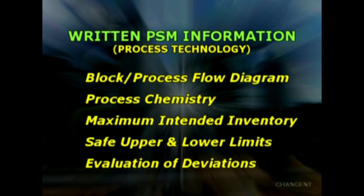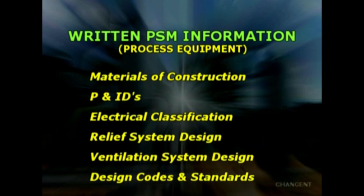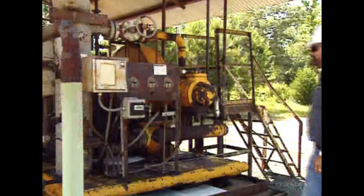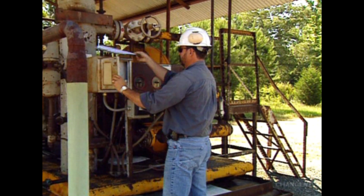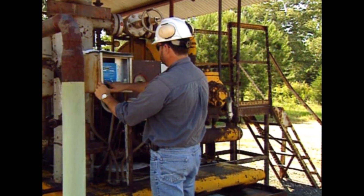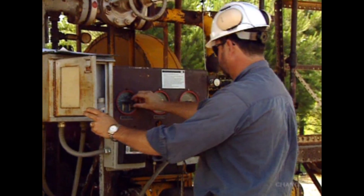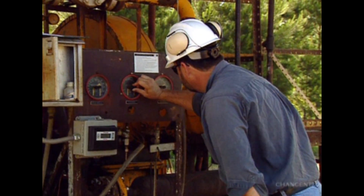Written information on the equipment used in the process must include at least: materials of construction, piping and instrumentation diagrams (P&IDs), electrical classification, relief system design and design basis, ventilation system design, design codes and standards employed, material and energy balances for processes built after May 26, 1992, and safety systems such as interlocks and detection or suppression systems. The employer must document that equipment complies with recognized and generally accepted good engineering practices. If equipment was designed using codes no longer in general use, the employer must document that it is designed, maintained, inspected, tested, and operated in a safe manner.